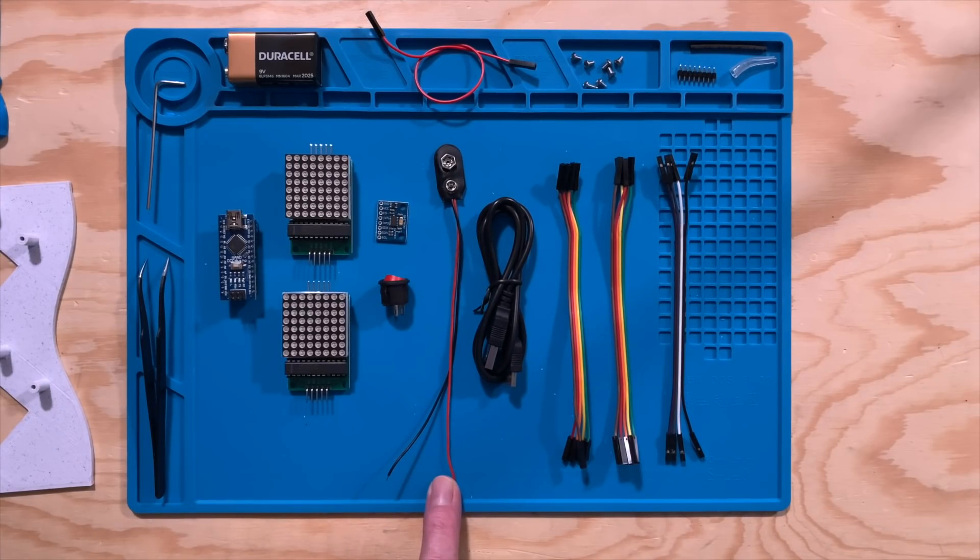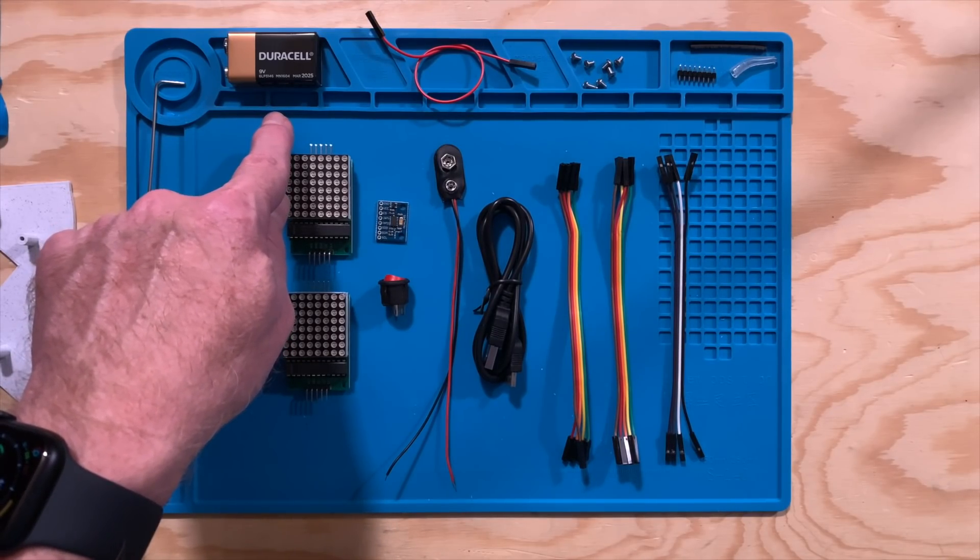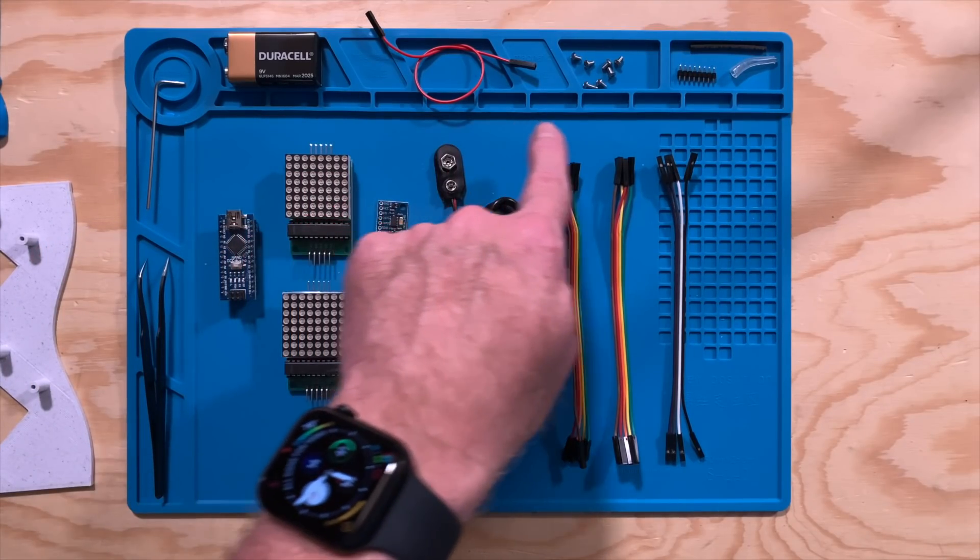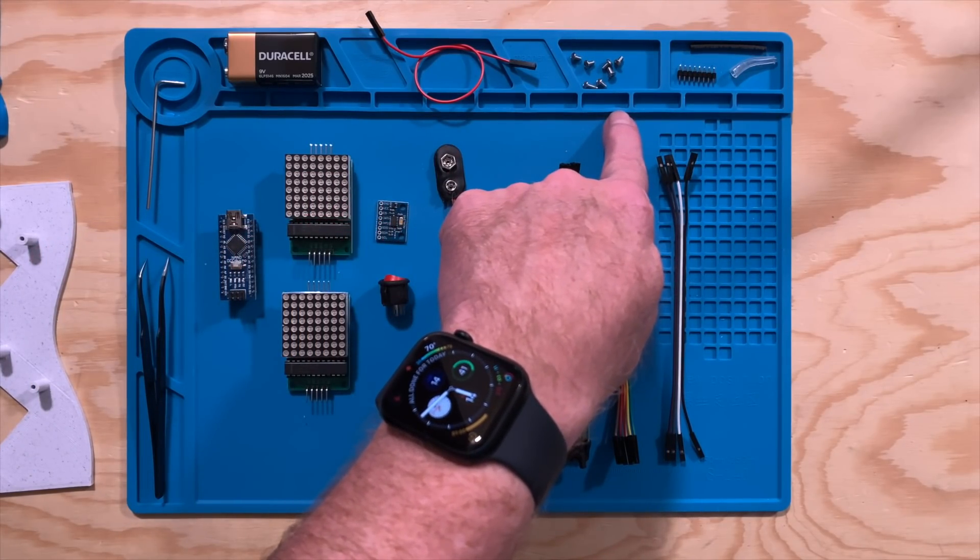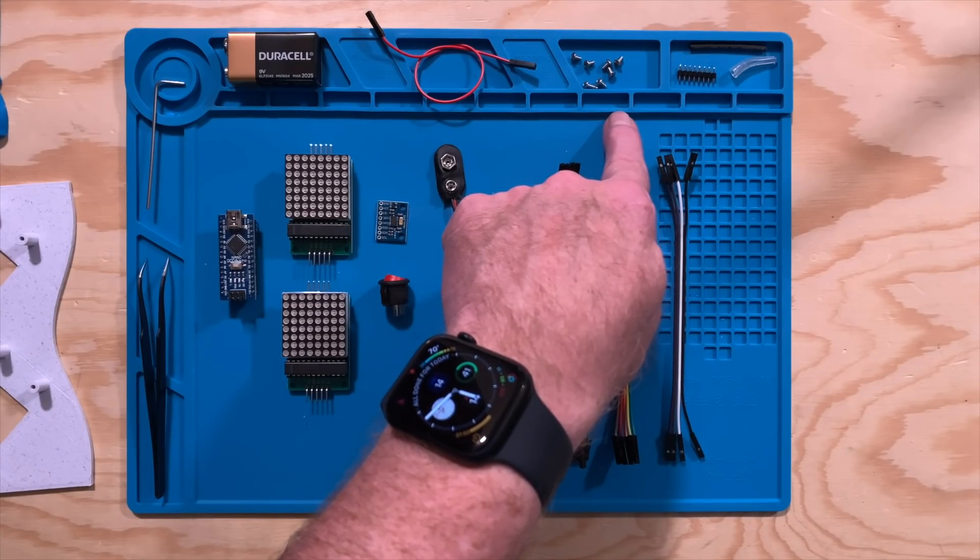There's also a connector for a 9-volt battery, a USB cable to connect your computer to the Nano to load the hourglass program onto it, and these connecting wires. You'll need to supply your own 9-volt battery for this project, and you may also need to supply another wire or two.